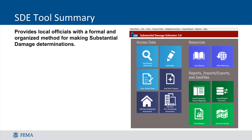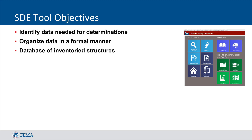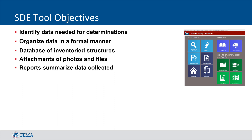One of the best things about the SDE tool is that it acts as an organizing platform for all the substantial damage data that a community needs to collect on structures after a major event. Since it is designed specifically for collecting substantial damage information, the data is organized into an easily reviewable format that is conducive to making determinations of whether a structure has been substantially damaged. Objectives for using the tool include identifying data that needs to be collected, recording that data in a formal and organized manner, housing a database of inventoried structures, providing a repository to store photos and other files, creating reports that summarize the data and calculations that led to the substantial damage determination, and meeting NFIP requirements related to performing substantial damage determinations.